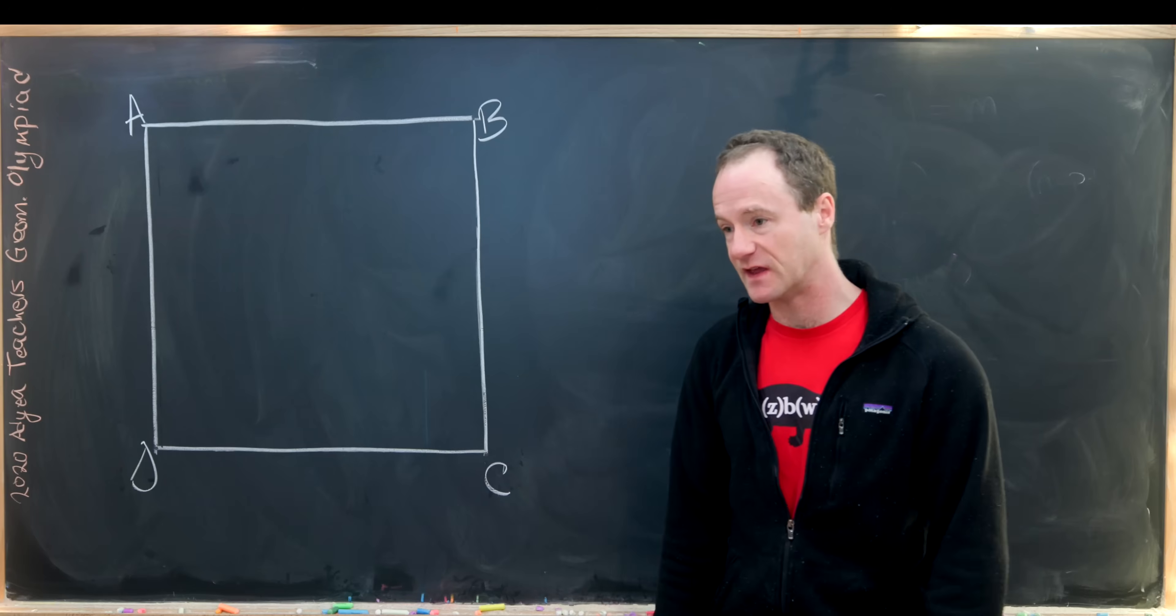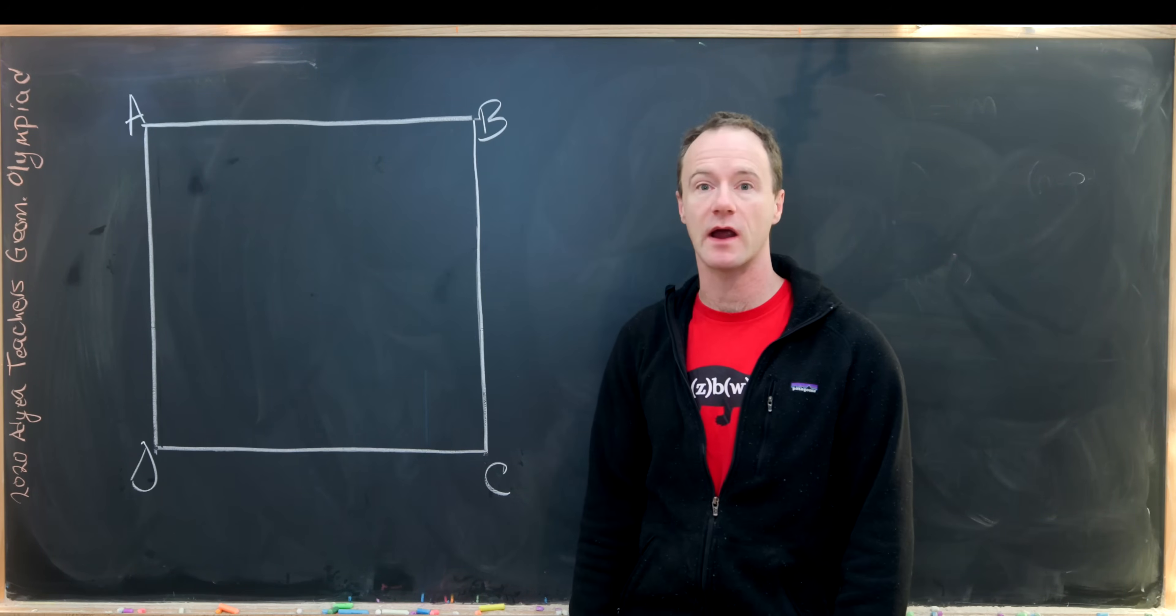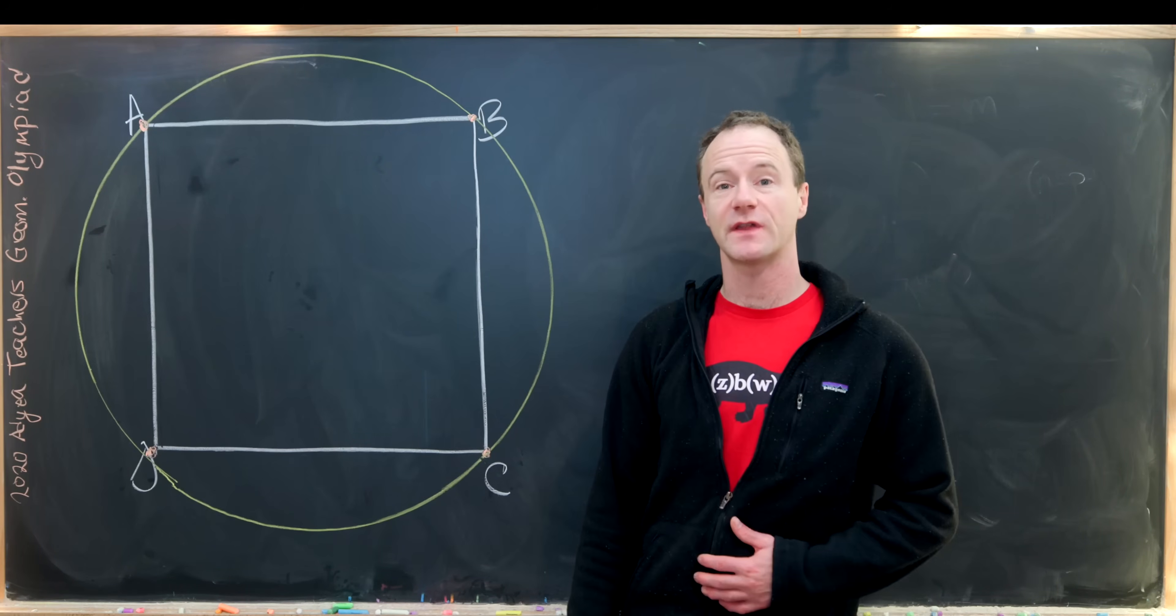And then our first thing will be to circumscribe a circle about this square. So let's get that circle on the board. That looks good.